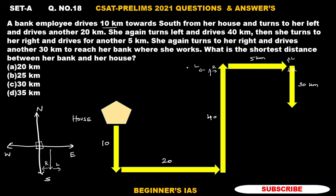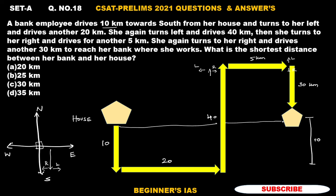She has reached her bank here. We need to identify the shortest distance between her bank and her house. The total is 40, and if it is 30, it leaves 10 here. So the shortest distance combines 20 and 5, which is 25 kilometers. This 25 kilometers is the shortest distance between the bank and her house. Thank you all, have a good day.